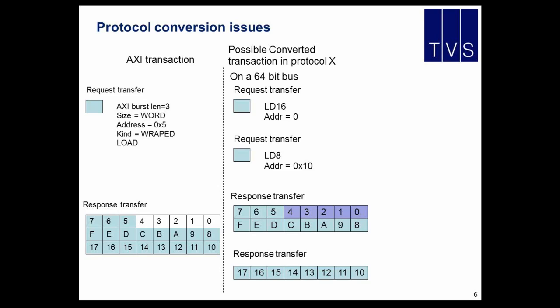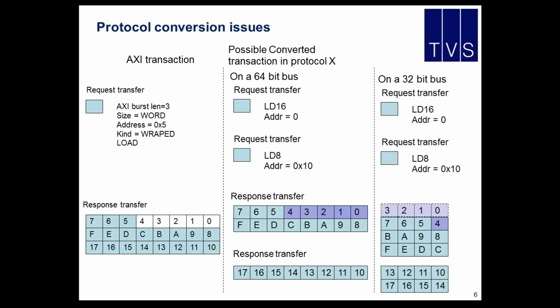If you take the same transaction translated into a 32-bit bus, you actually end up with the same load 16 and load 8, but the load 16 could start at address 4 and you will still get a valid result. So your verification environment should be able to handle this — if you build a verification environment, you need to take care of this.